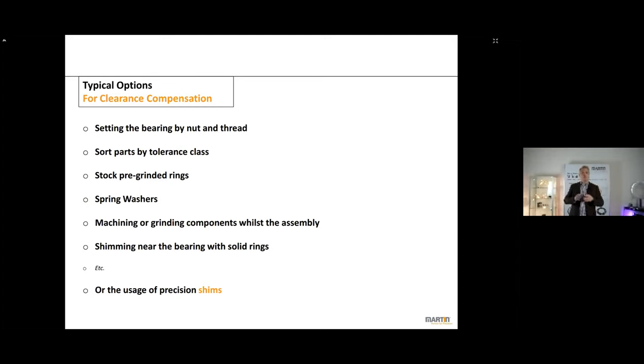There are many other options how to deal with gaps, we call it gap management as well. You can set the right bearing clearance by lock nut thread, you can also sort out parts by their tolerance classes, or you just stock pre-ground spacers and rings. You also can use spring washers, or you simply wise the assembly, you machine down or grind any of those components related for that job. There are so many ways what you can do about gap management, but you have to make a choice. And each choice has different effects on your process chain in your company and then later on in the processes of your customers.